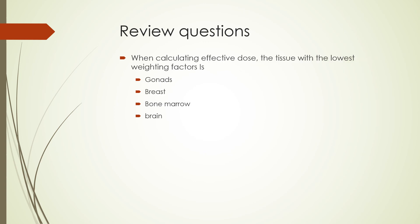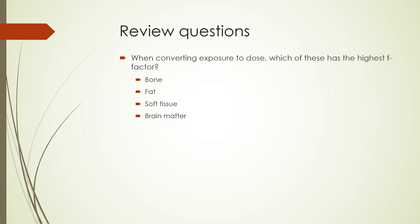Next question: when calculating effective dose, the tissue with the lowest weighting factor is? The choices are gonads, breast, bone marrow, or brain. The correct choice is brain. Next question: when converting exposure to dose, which of these has the highest F-factor? The choices are bone, fat, soft tissue, or brain matter. The correct choice is bone.